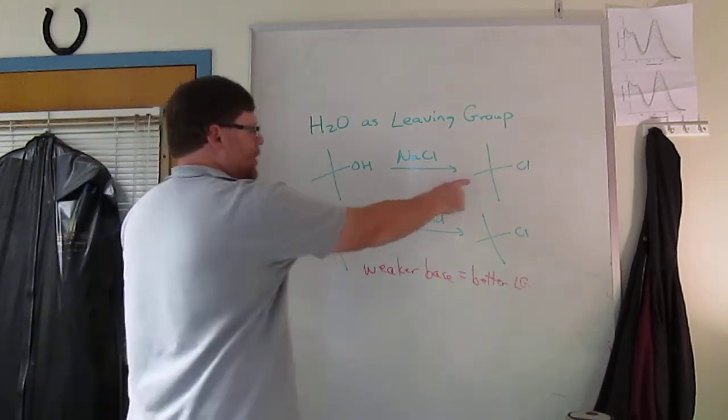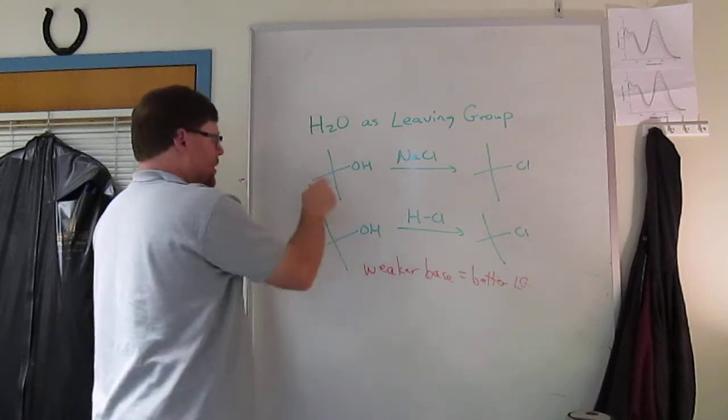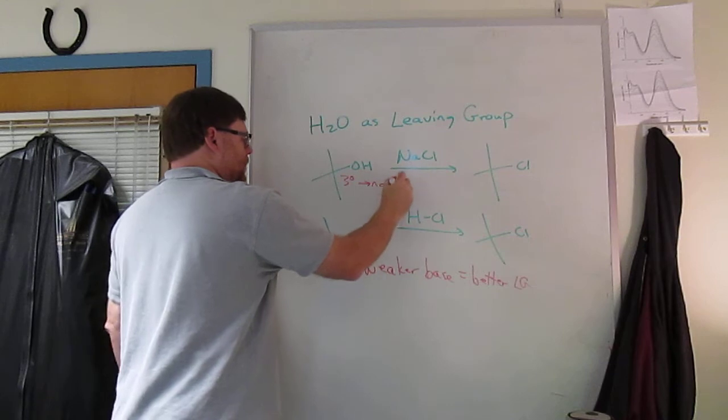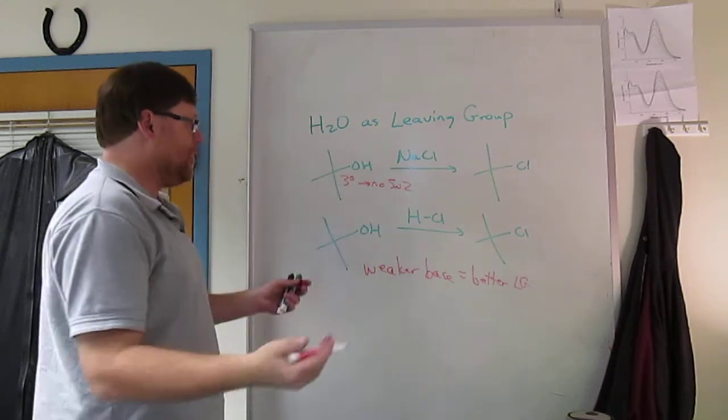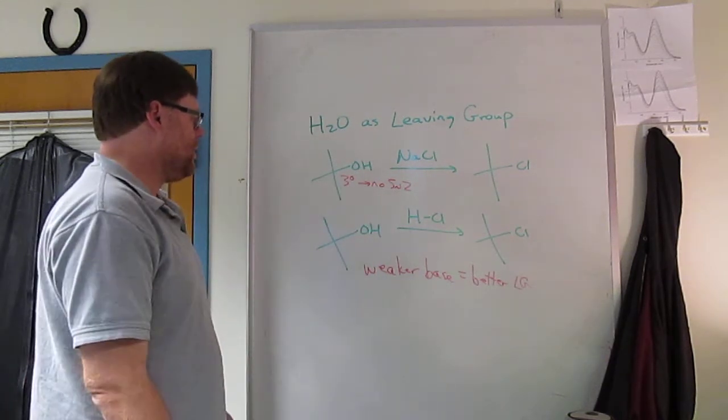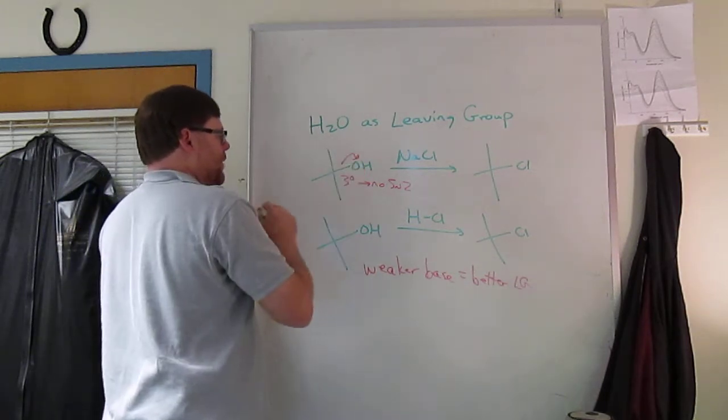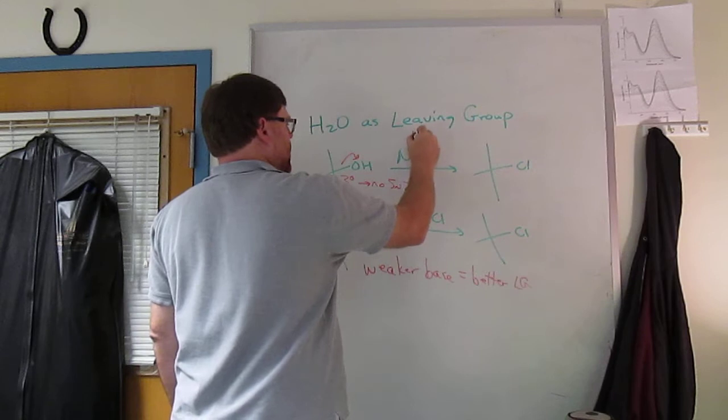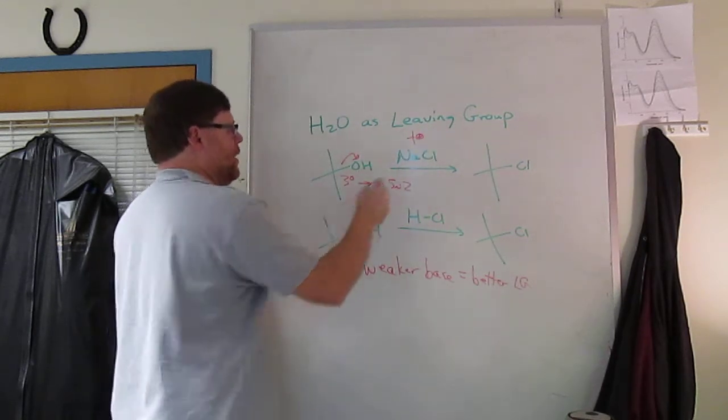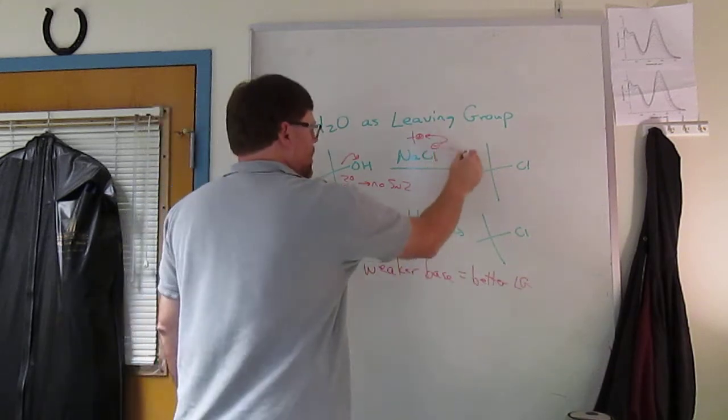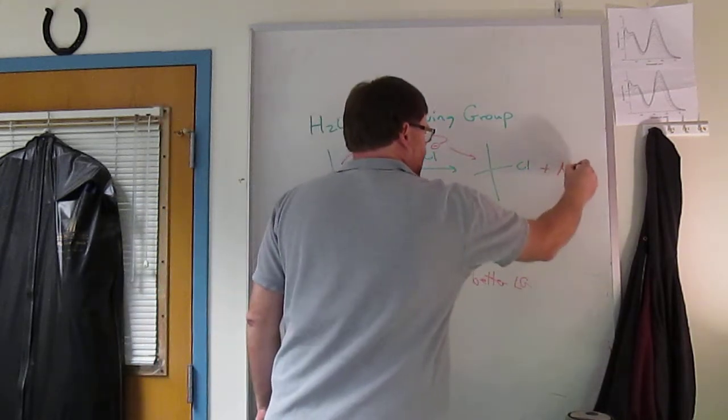So in the top reaction, it's a nucleophilic substitution. It's a tertiary carbon, so no SN2. That means it has to be an SN1 if it's a substitution reaction. So what would have to happen here is hydroxide would have to leave. We would go through a tertiary carbocation and then the negative chloride would attack, go to the products. And you would make sodium hydroxide.